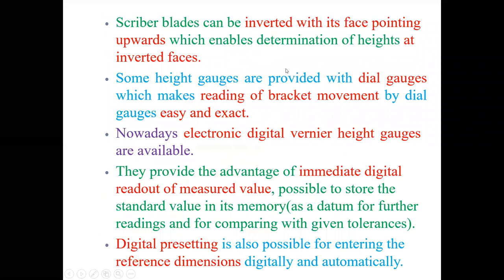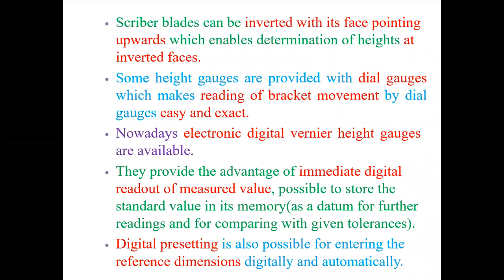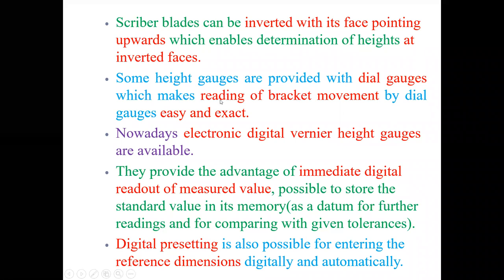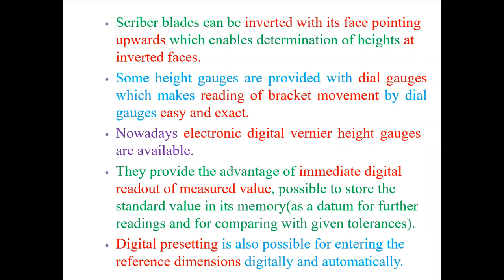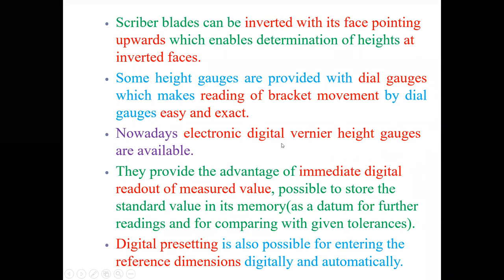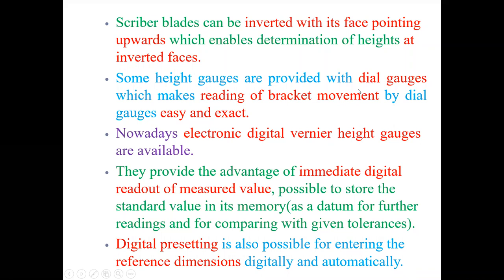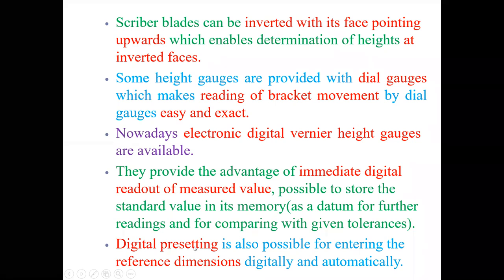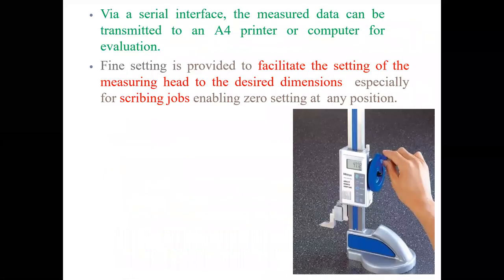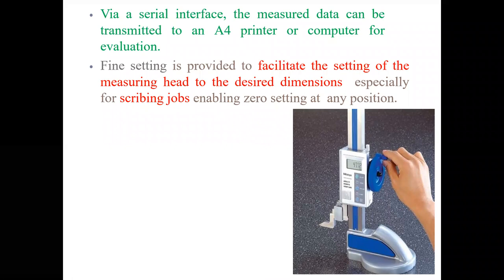With the space pointing upward, the height gauge enables determination of heights at inverted pieces. Some height gauges are provided with dial gauges, which give direct measurement — whatever reading is taken is displayed via a pointer on the dial gauge. Electronic digital vernier height gauges are also available, giving digital output. With digital height gauges, you can preset the required height with respect to a reference dimension and transfer the data to a printer.